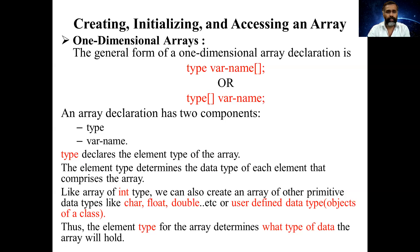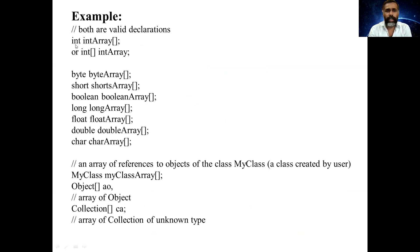For example: 'int intArray[]' or 'int[] intArray' — this is the syntax for declaring an int array. You can also declare arrays of different data types: byte, short, boolean, long, float, double, char, as well as user-defined types like 'MyClass myClassArray[]' for an object array. For collections of unknown type, you can also create an array. These are declarations of arrays of different data types.